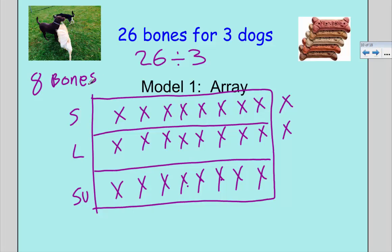But since there's a remainder, there's some extra bones left over. We call that, we're going to use the letter R to represent remainder. I'm going to say R2. So each dog gets eight bones and there's two left.